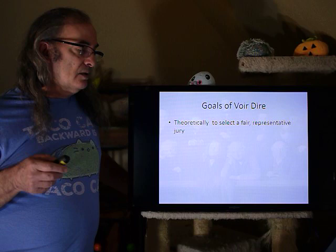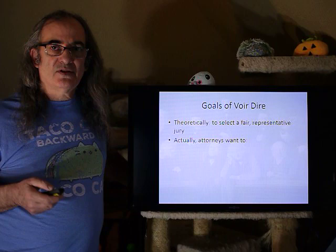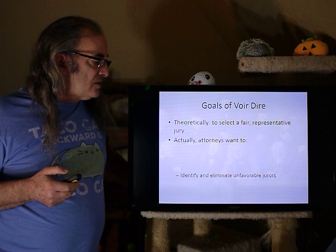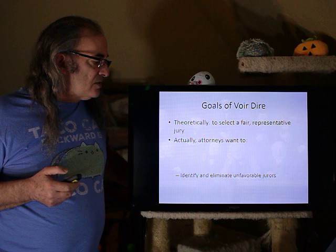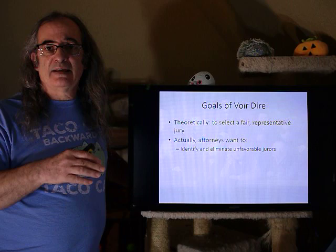The goals of voir dire are theoretically to select a fair and representative jury, but actually that's not necessarily what's going on. We live in an adversarial system. Attorneys want to win for their clients, so they want to identify and eliminate unfavorable jurors. If they have any idea that a juror might not be on their side, they want to prevent them from ending up on the jury during the voir dire process.